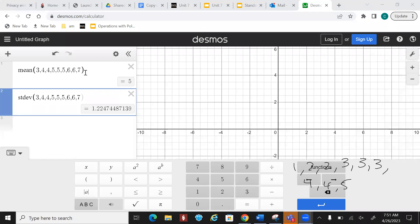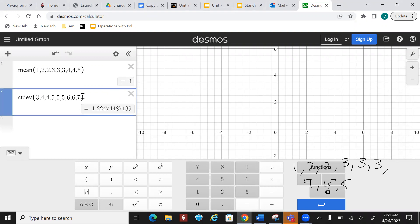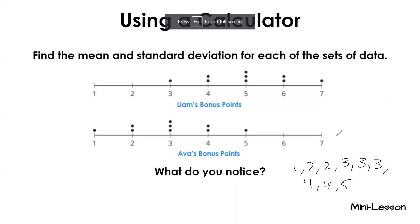All right. Let's plug these in. Let's see what you got. So again, you're just going to type that list. You're going to get 1, 2, 2, 3, 3, 3, 4, 4, 5. I got a mean of 3. Is that what you got? Standard Deviation. I'm going to have 1, 2, 2, 3, 3, 3, 4, 4, and 5. I got 1.22. Somebody said it. It's the same thing. What do you mean it's the same thing?